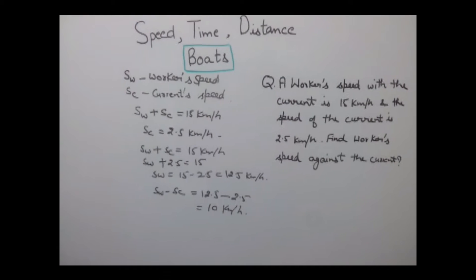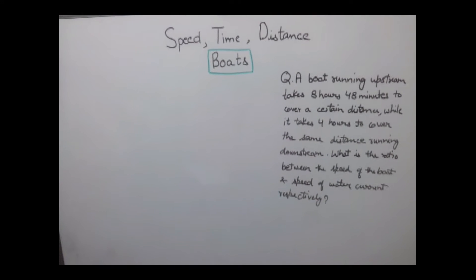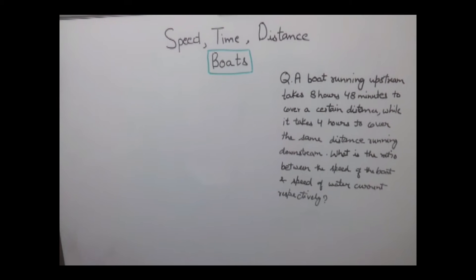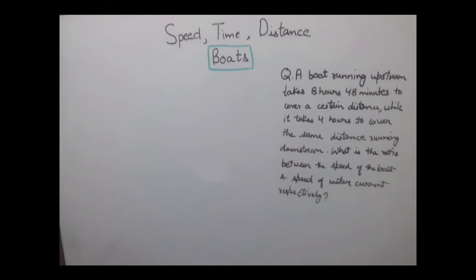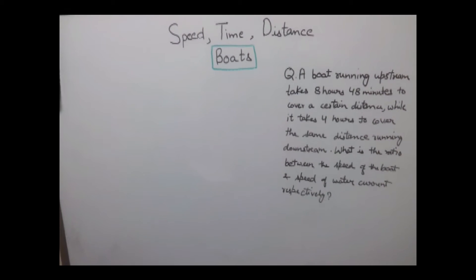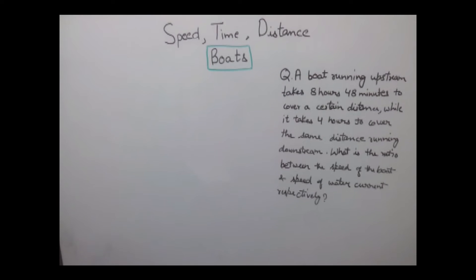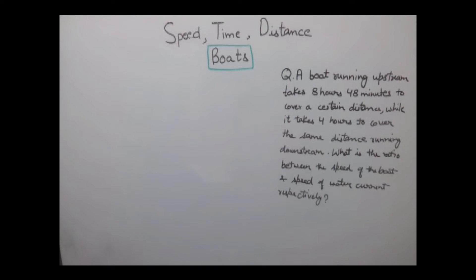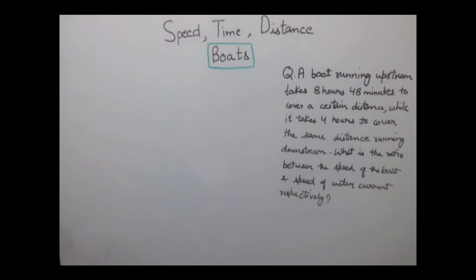Now let's see another example. A boat running upstream takes 8 hours 48 minutes to cover a certain distance, while it takes 4 hours to cover the same distance running downstream. What is the ratio between the speed of the boat and speed of the water current respectively?